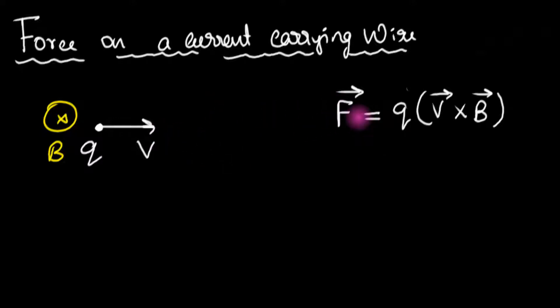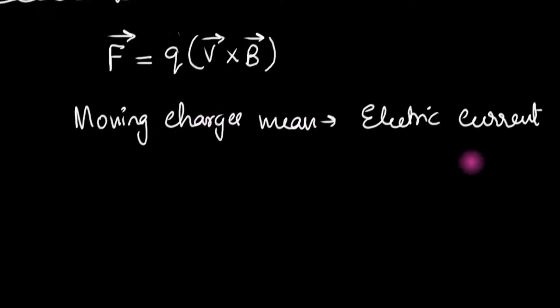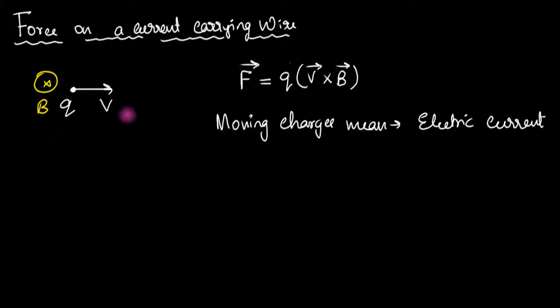Well, forces on moving charges might sound a little bit of abstract quantities for us because we don't deal with moving charges. But guess what, moving charges also mean something else. Moving charges mean electric current. Therefore if a magnetic field affects a moving charge, it can also mean magnets can affect electric current and that's going to be very useful to us.